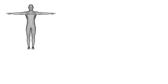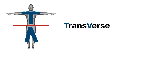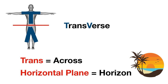Here are a couple more tricks to remember the transverse plane. If you divide the body using a transverse plane, you'll be left with an upper body shaped like a T and a lower body shaped like an upside-down V — and the T and V can help you remember transverse. The prefix 'trans' means across, and the transverse plane is also called the horizontal plane — think of the horizon for horizontal, which helps you remember it goes across horizontally.